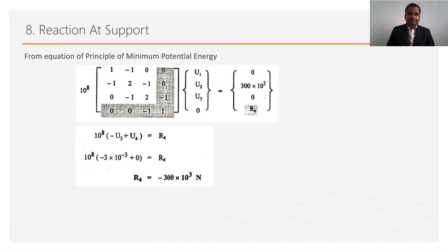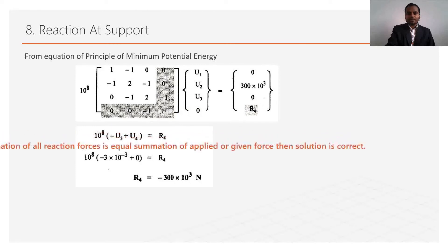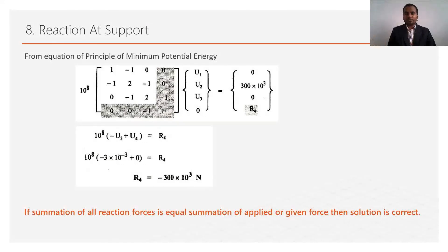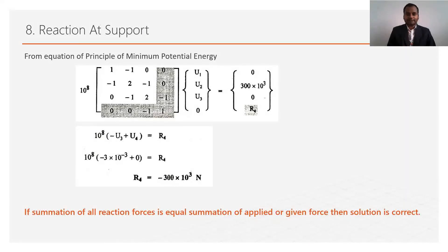From the reaction value we can verify the solution, because if the summation of all reaction forces equals the summation of applied forces, the solution is correct. In this numerical, the force applied at node 2 is 300 kN, and the reaction obtained is −300 × 10³ N, confirming that all numerical calculations are correct.